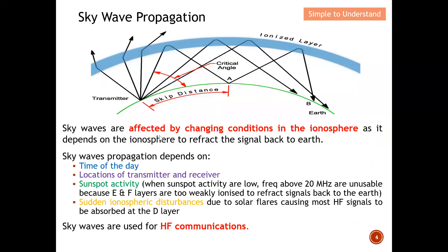Sky waves are affected by changing conditions in the ionosphere, as they depend on the ionosphere to reflect the signal back to the earth. Sky wave propagation depends on parameters such as the time of day, the location of transmitter and receiver, and sunspot activity. When sunspot activity is low, frequencies above 20 MHz are unusable because the E and F layers are too weakly ionized to reflect signals back to the earth.